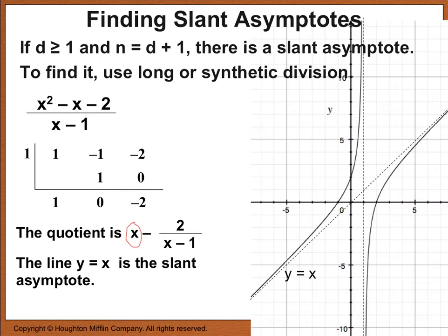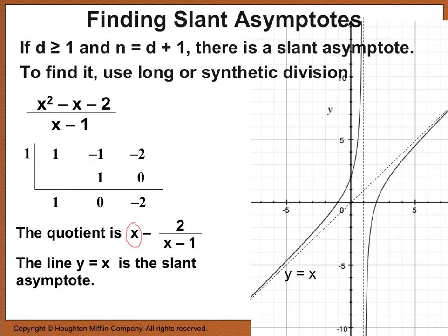This is what the graph looks like. I've labeled y equals x as the slant asymptote. You can see how the curve behaves near both the slant asymptote and the vertical asymptote. The slant asymptote exists because the degree of the numerator is 1 more than the degree of the denominator, provided the degree of the denominator is 1 or greater. We found it by synthetic division and graphed it as a dotted line for y equals x.